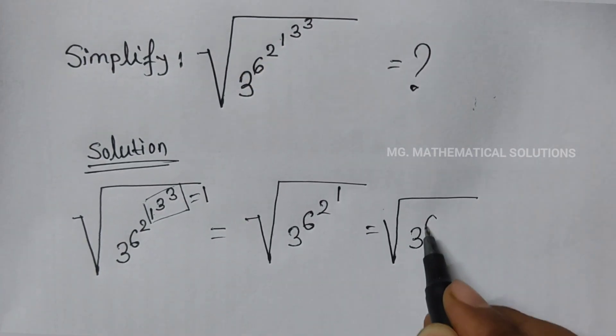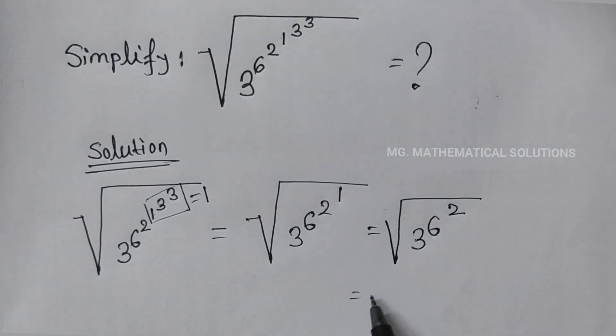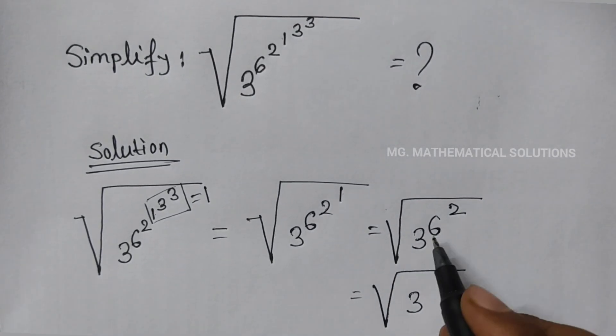Root over 3 to the power 6 to the power 1 means 2, equals 3 to the power... 6 squared means 36.